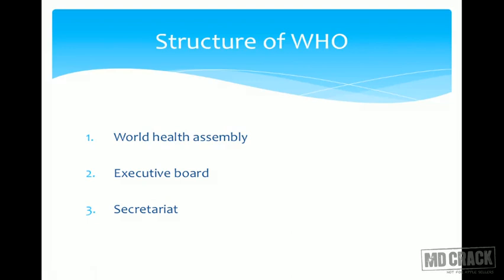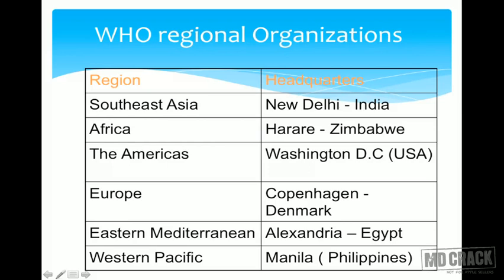The structure of the WHO comprises the World Health Assembly, the Executive Board, and the Secretariat. WHO Regional Organizations: you have on the slide the regions of the world and on the right-hand side their headquarters. Most important is that the headquarters for the Southeast Asia region is at New Delhi. For Africa it is in Harare, the Americas in Washington DC, Europe in Copenhagen, Eastern Mediterranean in Alexandria, and Western Pacific in Manila. Since we live in India and you are giving Indian examinations, the Southeast Asian region headquarters at Delhi is most likely to be asked.